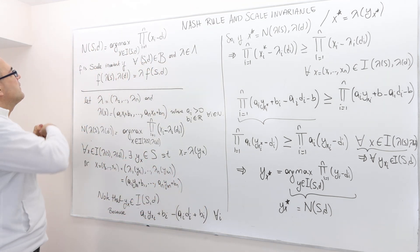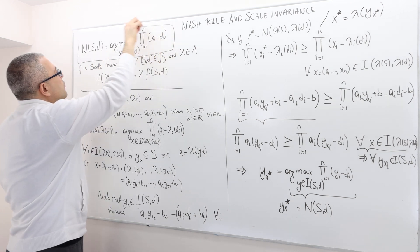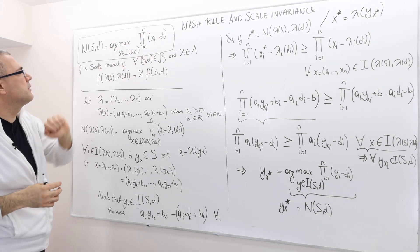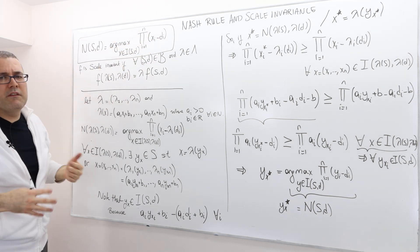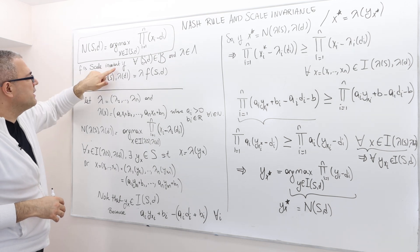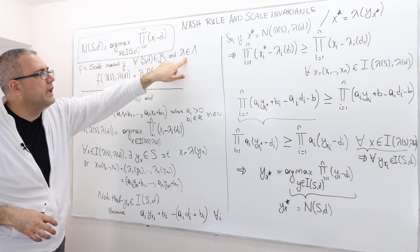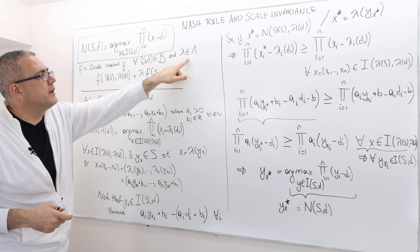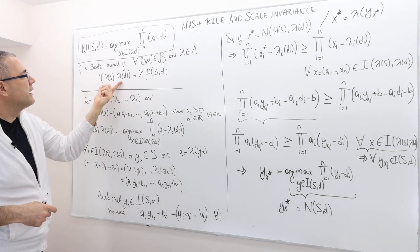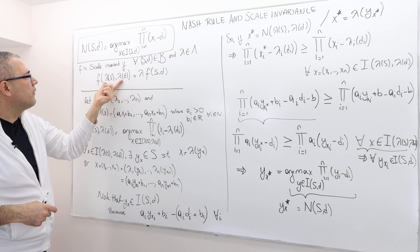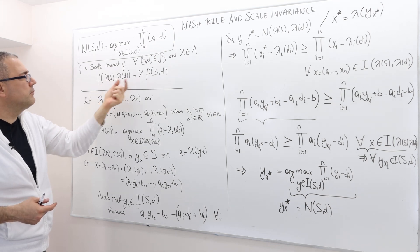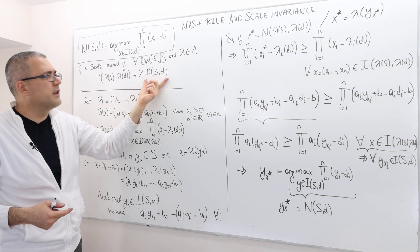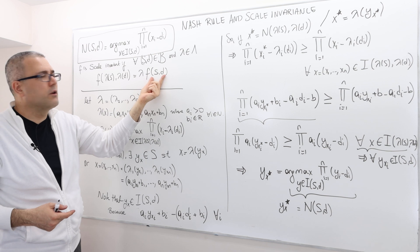So this is how we define the Nash bargaining rule — it's basically the argument that maximizes this multiplication. And let's remember what scale invariance was. A bargaining rule is scale invariant if for any bargaining problem and for any positive affine transformation — remember this is a vector — when I calculate the bargaining solution of this transformed bargaining problem, it's going to give me the transformed solution of the original problem.